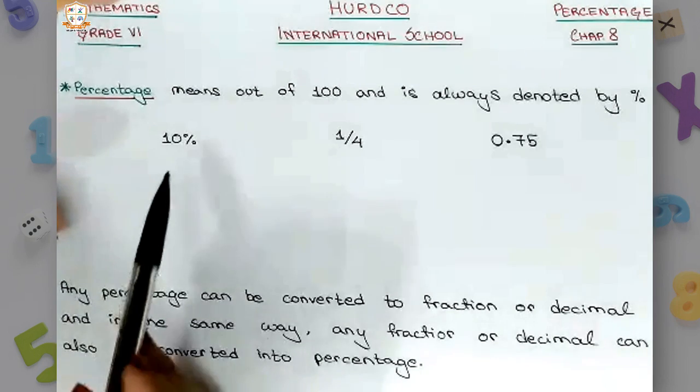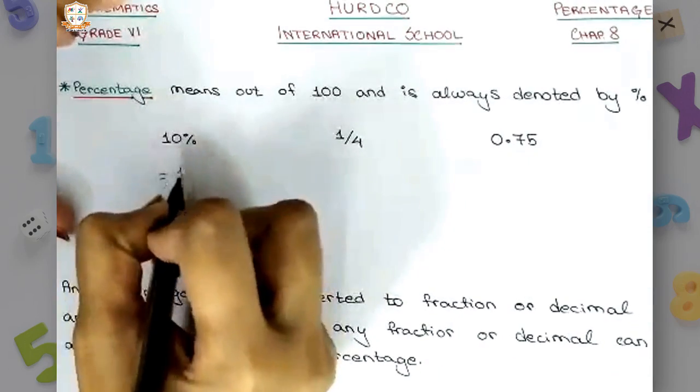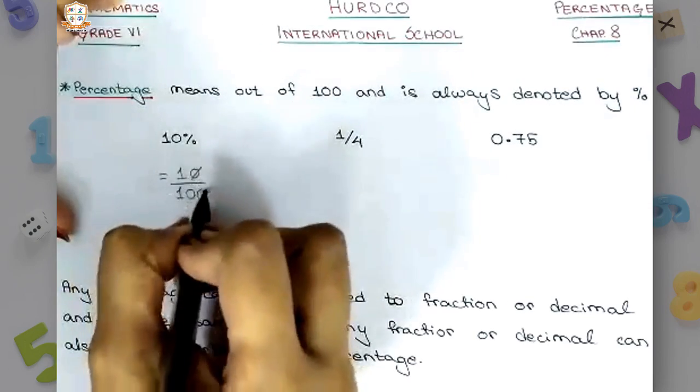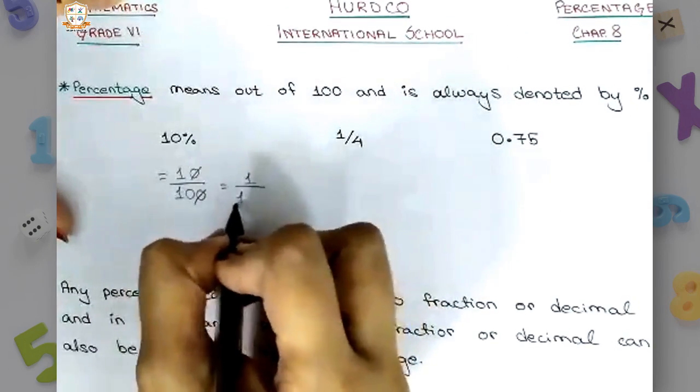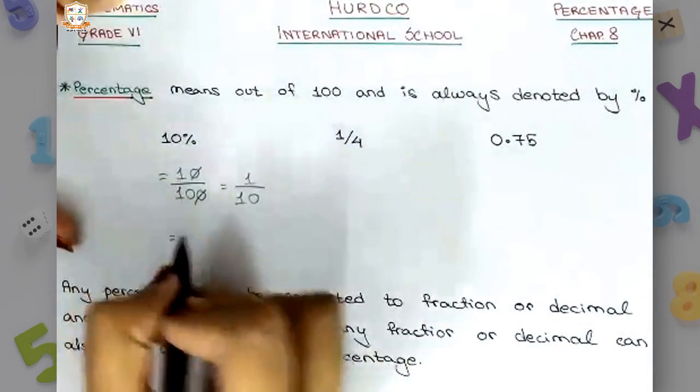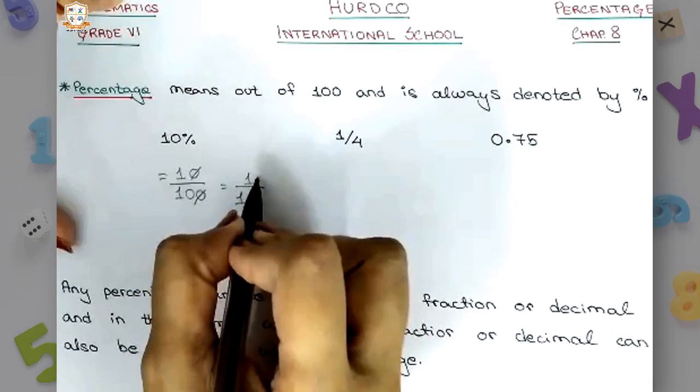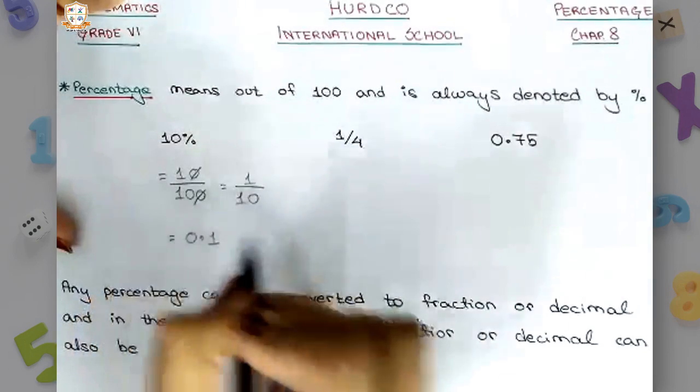For example, if we look at 10 percent, 10 percent simply means 10 divided by 100. We can further simplify this and write 1 by 10. Now 1 by 10 can also be written as a decimal which is 0.1, shifting the decimal of the 1 one digit to the left.